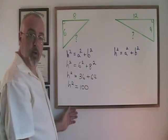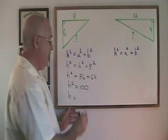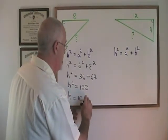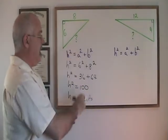h squared is equal to 100, so therefore h will be equal to the square root of 100, which is 10. In this case, my hypotenuse is 10 units in length.